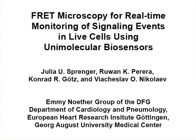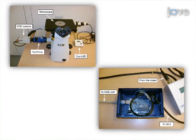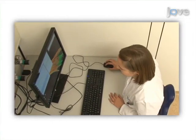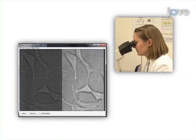This video article describes how to build a customized epifluorescence FRET imaging system from commercially available components and shows how to use it for real-time monitoring of intracellular cyclic AMP in intact cells. First, a step-by-step procedure for assembling the FRET imaging system is detailed. Next, the process for installing and configuring the software is shown.